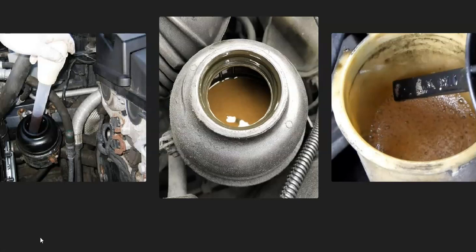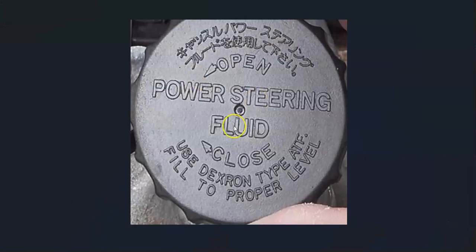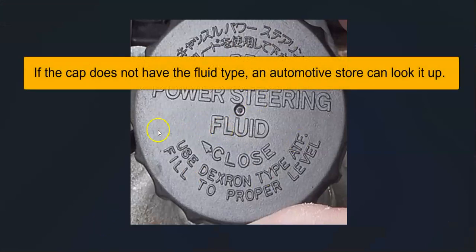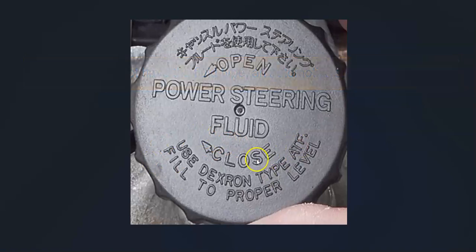The main way that you change out power steering fluid is first you go and look at your cap and it'll tell you what type to use, since there are different types of power steering fluid. First thing to do: go look at the cap, see what type you use, and then go buy the correct type.